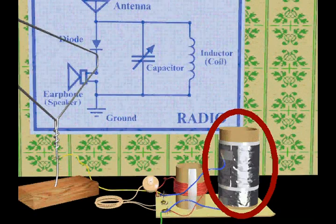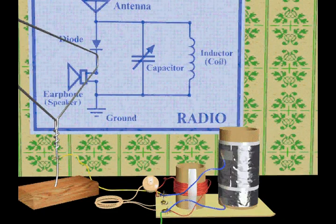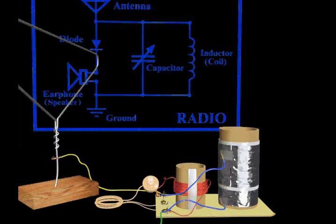The aluminum foil and the paper on the tube form a capacitor. A capacitor is any two conductors separated by an insulator.